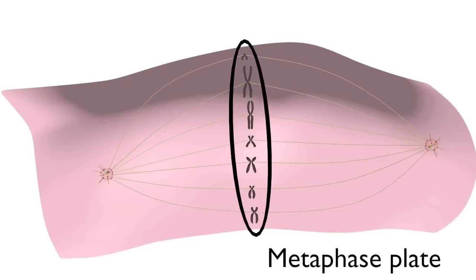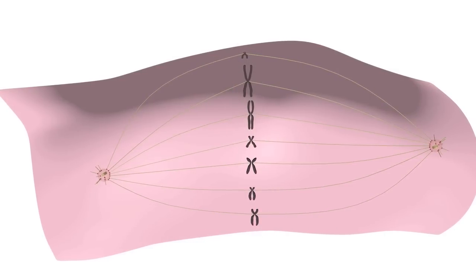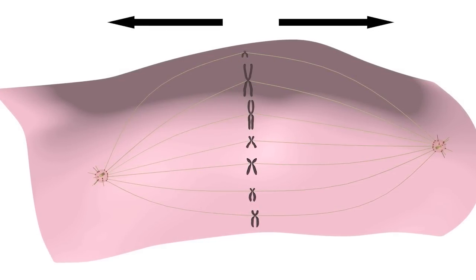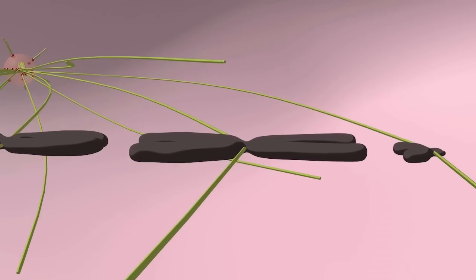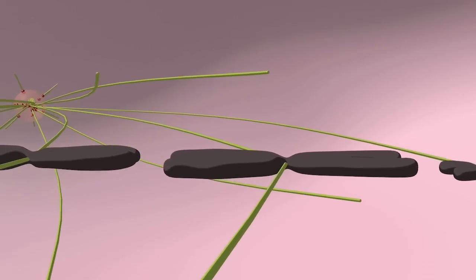At this point, the cell is poised to separate the sister chromatids so that they are pulled by microtubules to opposite poles of the spindle. But before this can happen, the cell must ensure that all chromosomes have bi-oriented.